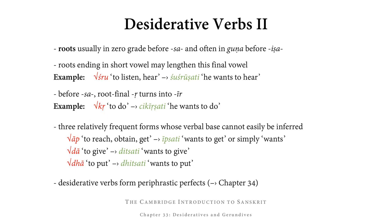Verbal roots, when used in desiderative verb forms, usually stand in zero grade before the suffix sa, and often in guṇa before iṣa. So, for example, from bhṛ we had bibhārṣati, where bhār is the guṇa of bhṛ, appearing in front of iṣa.